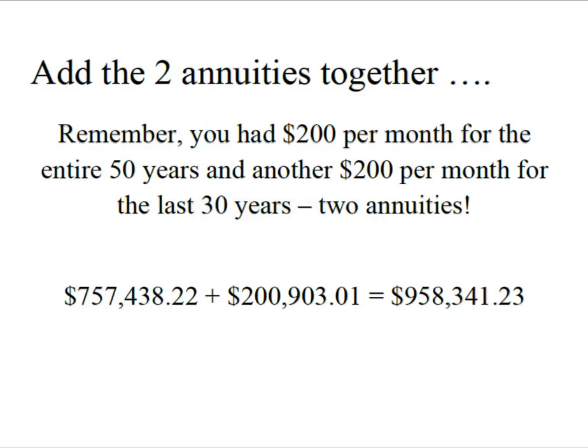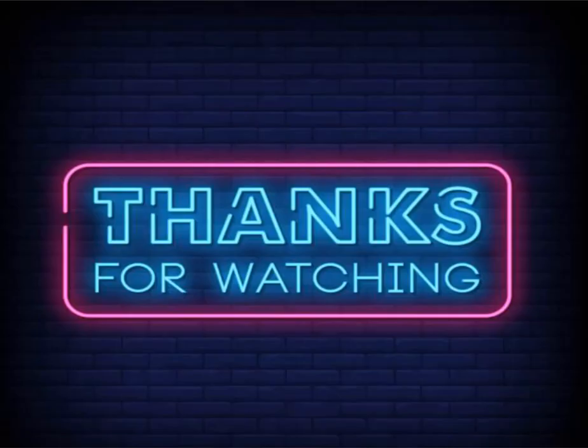We're going to add the two annuities together. You had $200 a month for the entire 50 years and another $200 per month — the additional contribution — for the last 30 years, which gives us two annuities. Adding the $757,438.22 and the $200,903.01, at the end of 50 years you'll have $958,341.23. That's just $400 a month for your working life — that's almost a million dollars. I hope you found this video useful, thanks for watching.